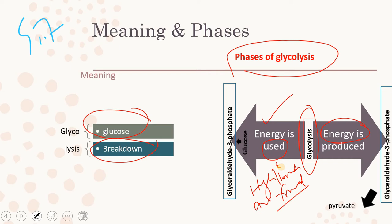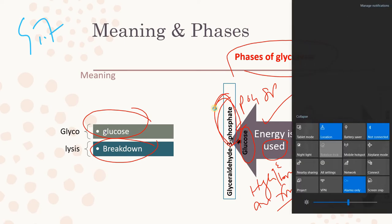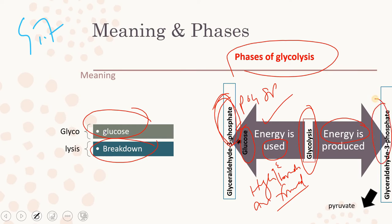High-energy bonds are formed. For example, this glucose molecule will have one phosphate group incorporated into it. Once this phosphate group is incorporated, the product is called glyceraldehyde-3-phosphate. In the energy-investment phase, high-energy bonds in the shape of phosphate are always formed. In the energy-payoff phase, already phosphorylated glyceraldehyde molecules are converted into pyruvate.